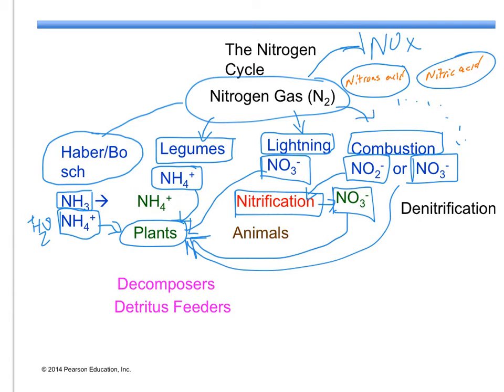So those are the four ways that we have for nitrogen fixation. Next, we look at plants. If a plant dies, it's going to undergo decomposition, and the decomposers and detritus feeders are going to convert that to ammonium ions.